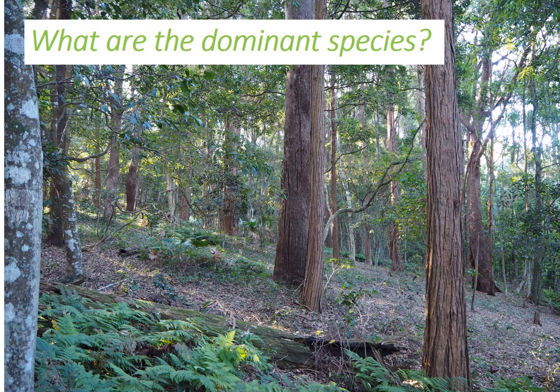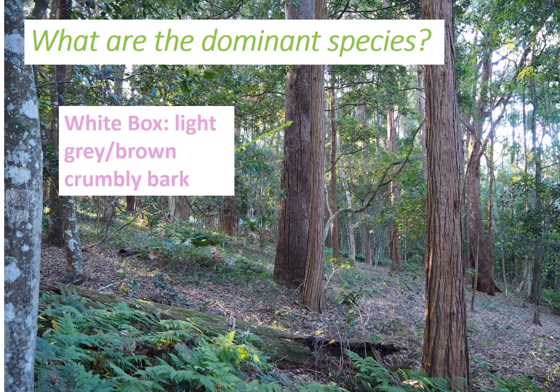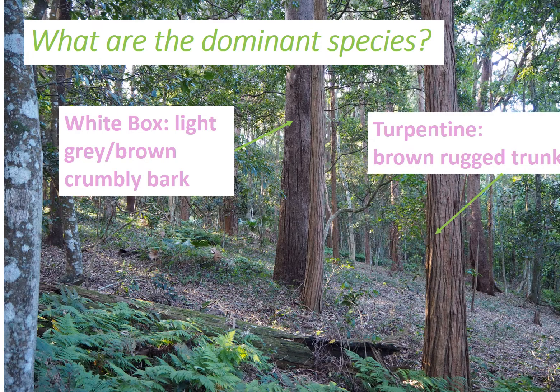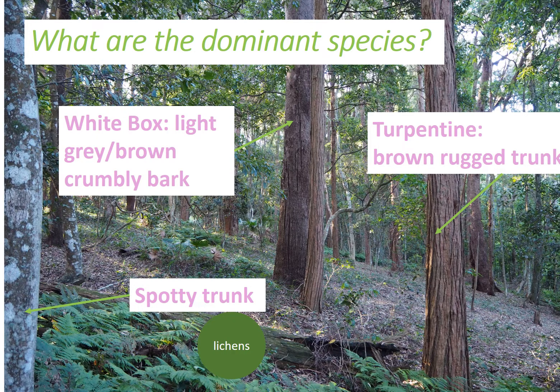What about the dominant species? There's a white box eucalypt which has a light grey-brown crumbly bark that you can see at the back there. Also prevalent here is the turpentine, which has a brown rugged trunk. There are quite a few trees with spotty trunks, but these are not always indicative of a particular species — the spotty, mottled characteristic is due to lichens and algae. A few species that support that include pittosporum and coachwood.